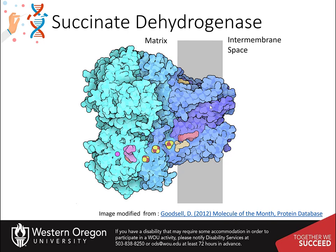Succinate dehydrogenase first extracts hydrogen atoms from succinate, transferring them to the carrier FAD. The resulting product is fumarate. Interestingly, this protein is also complex II in the electron transport chain, where it can directly transfer the electrons harvested from succinate into the electron transport chain. We will come back to this complex in the next section covering the electron transport chain.